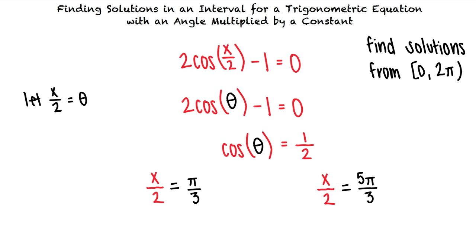To isolate x we must multiply both sides of our equations by 2. When we do this we see that x equals 2π thirds or x equals 10π thirds.